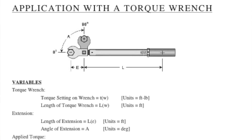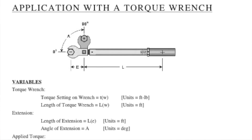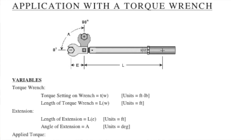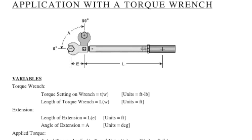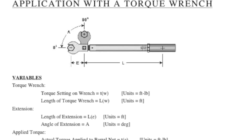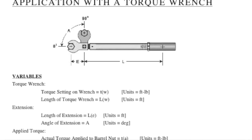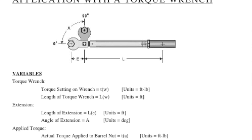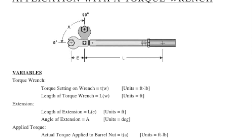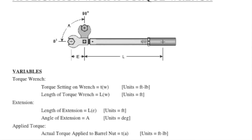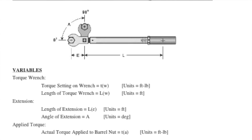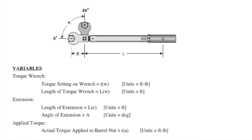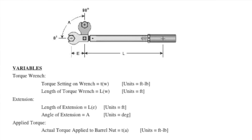With a high-level understanding of torque, let's move on to the application with a torque wrench for barrel nut installations. I pulled a picture from the web that gives a good depiction of using a torque wrench with an extension. Defining the variables: the torque setting on the wrench is Tw, the length of the torque wrench is Lw. The length of the extension is LE, the angle of the extension is A, and the actual applied torque to the barrel nut is TA — in units of foot-pounds, with lengths in feet.